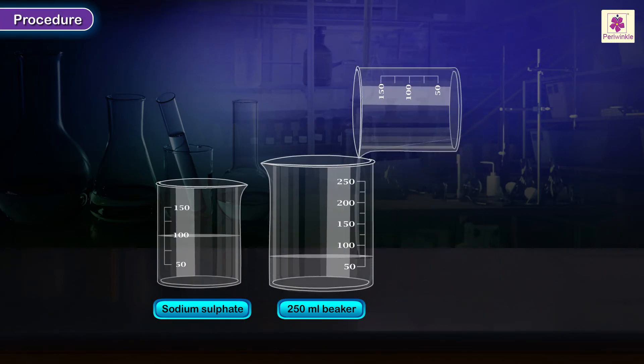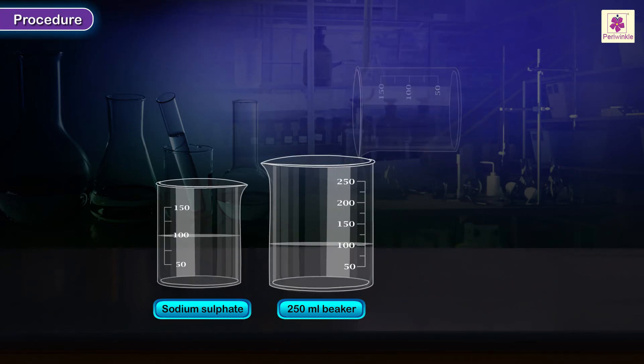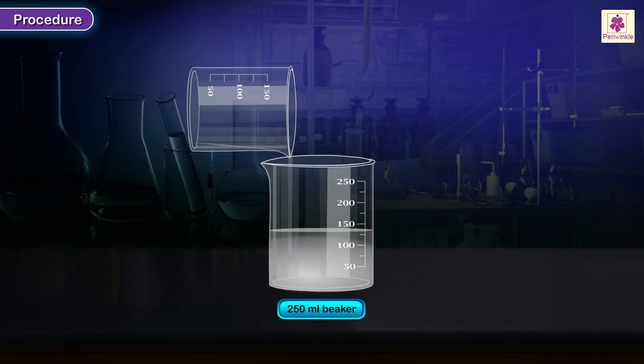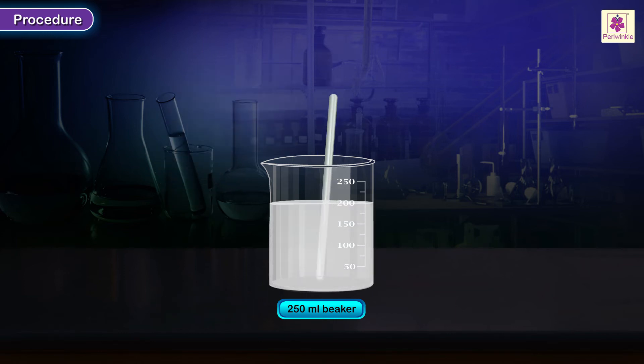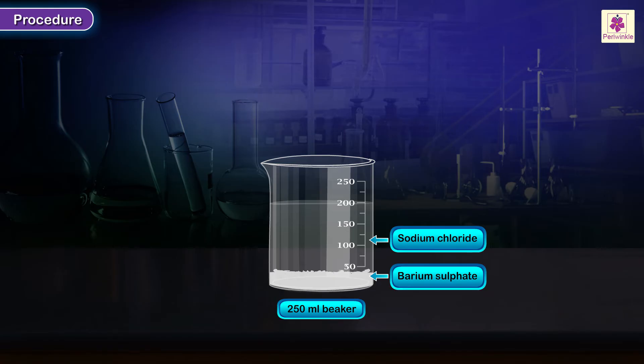Mix the barium chloride solution and the sodium sulphate solution in this beaker. Stir the contents using a glass stirrer. A white precipitate of barium sulphate will be formed as a result of precipitation reaction.